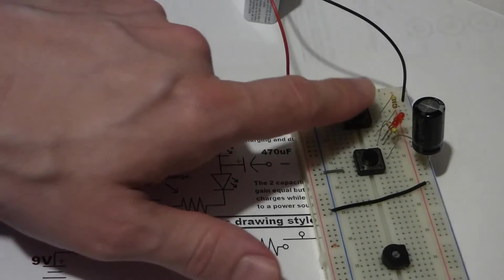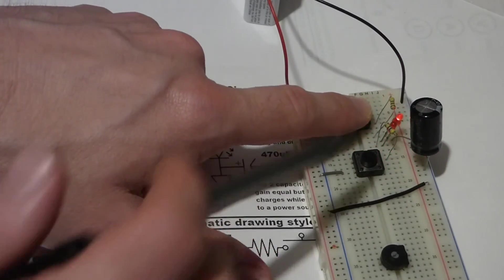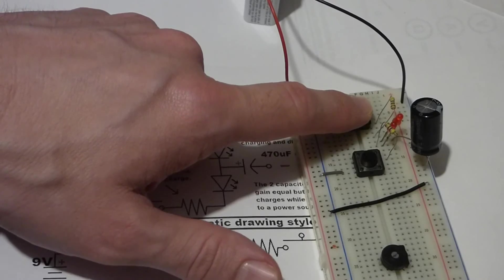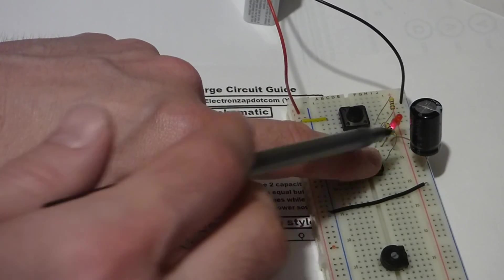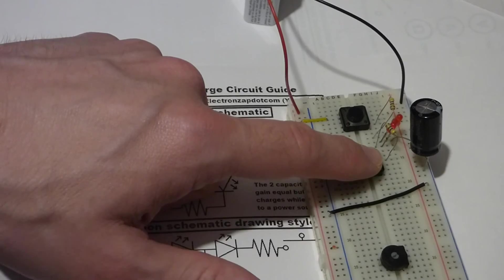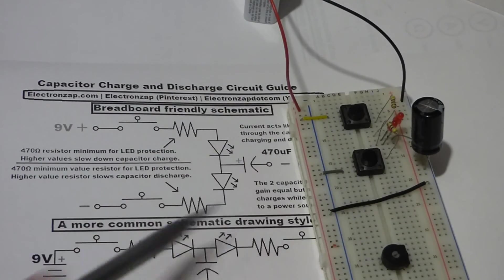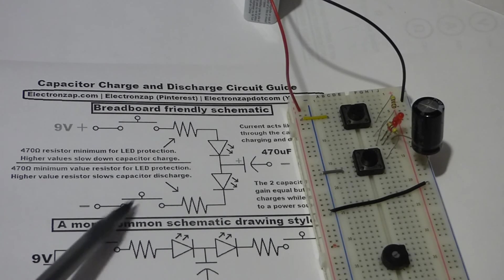But anyways, here we have the circuit. You can see now the capacitor is charging, you know because the top LED lit up. And now the capacitor is discharging, you know that because the bottom LED lit up.